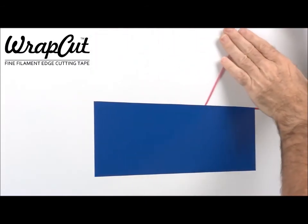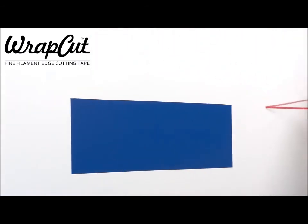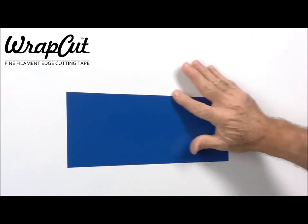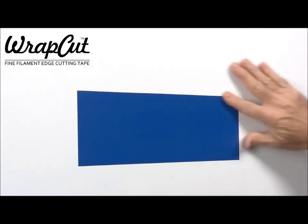Also note that wrap-cut can be applied in the opposite direction, allowing the filament to be pulled along the bottom edge, leaving the tape fully exposed rather than behind the finished film.